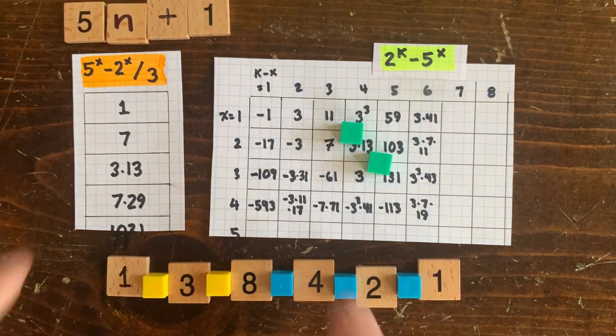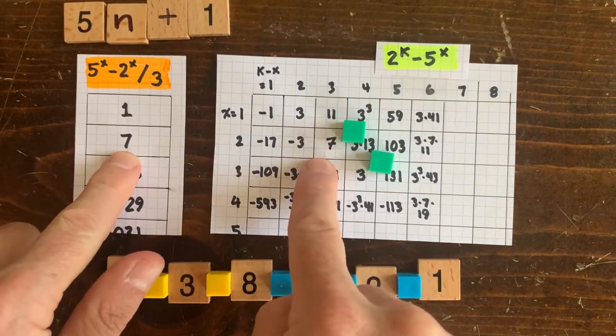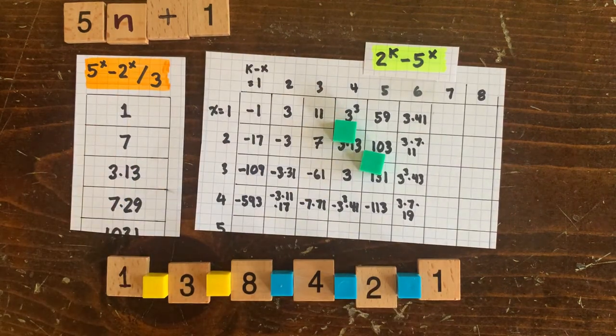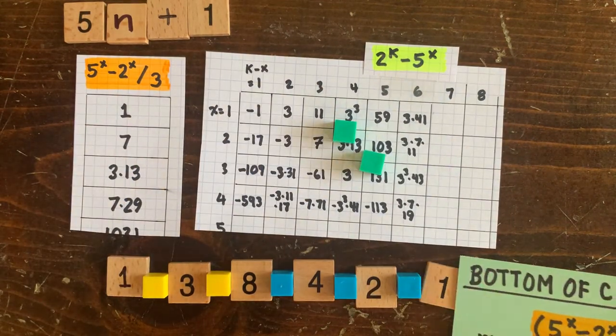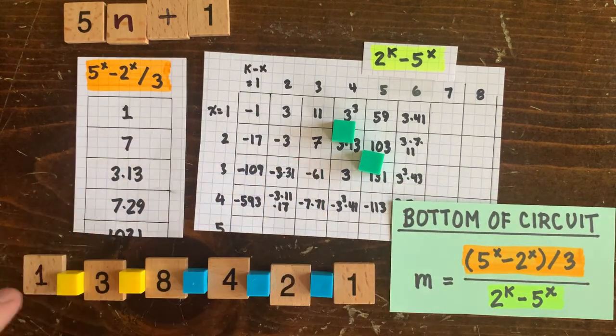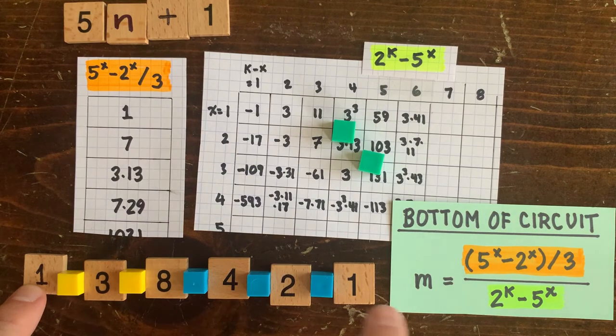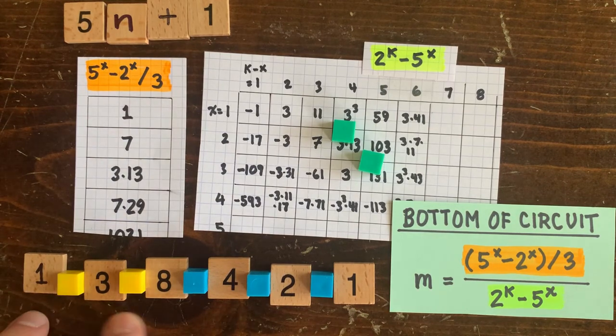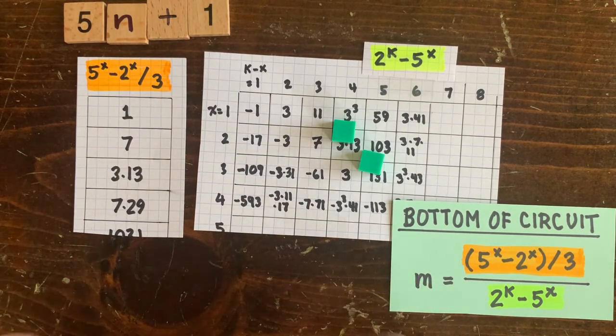On the other hand, now that we've found a case where the denominator equals the numerator so that the bottom member of the circuit is 1, well, we can be sure it will never happen again anywhere in this chart. That's because 1 can't be the bottom member of two different circuits. If you start with 1 and apply our deterministic rules, only one thing is going to happen.